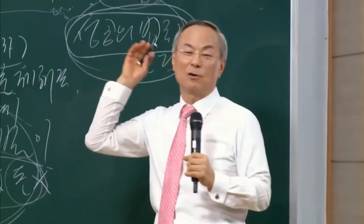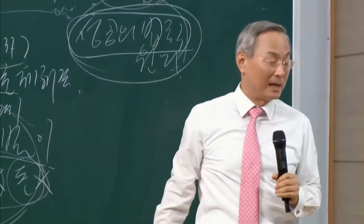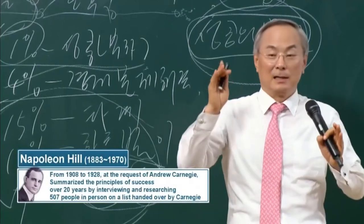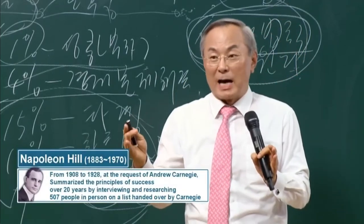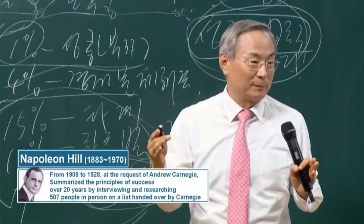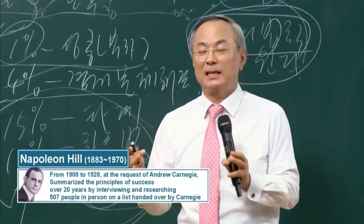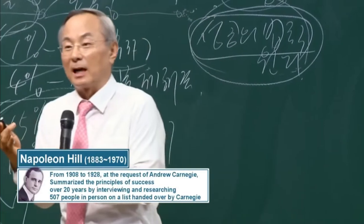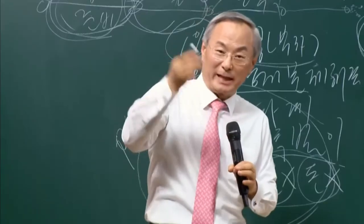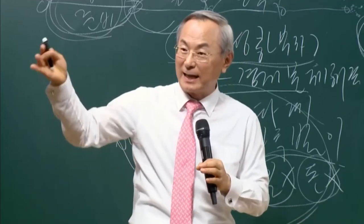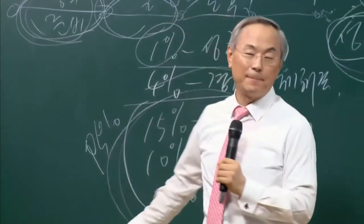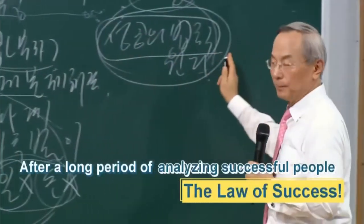He thought that he should tell many people about the law of success, so he asked Napoleon Hill to research 500 successful people over 20 years to find what they had in common and to summarize his findings as the law of success. Hill found the principles that these people had and how they succeeded. This is what's known as the law of success.